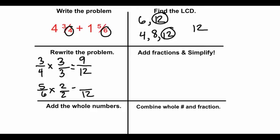So our new fractions when we rewrite them over here are going to be 9/12 plus 10/12. 9 plus 10 is 19 and our denominator stays the same.